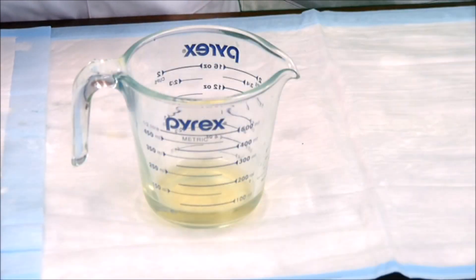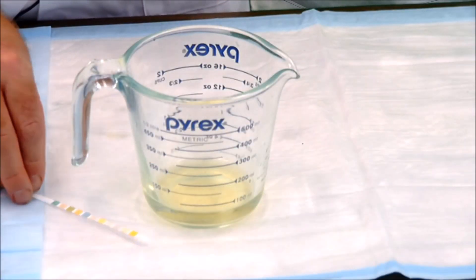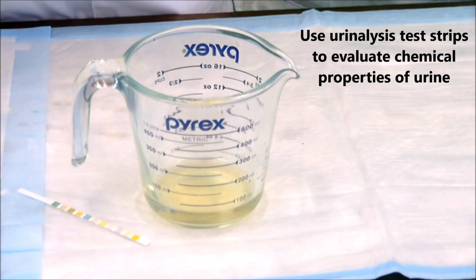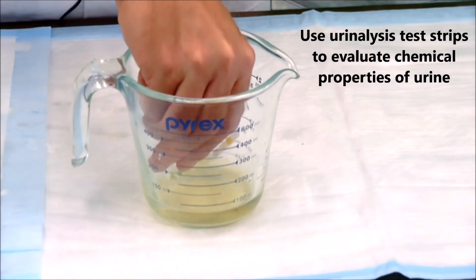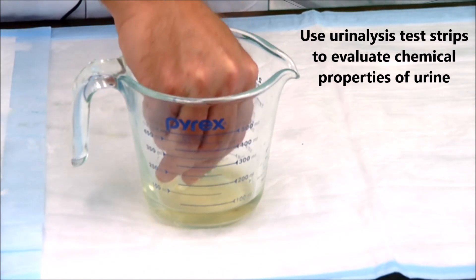So once you've successfully measured your urine, we then want to use one of our urinalysis test strips to measure the chemistry of that urine. So simply take out one test strip and then place it into the urine and make sure that all the pads are equally covered with urine.